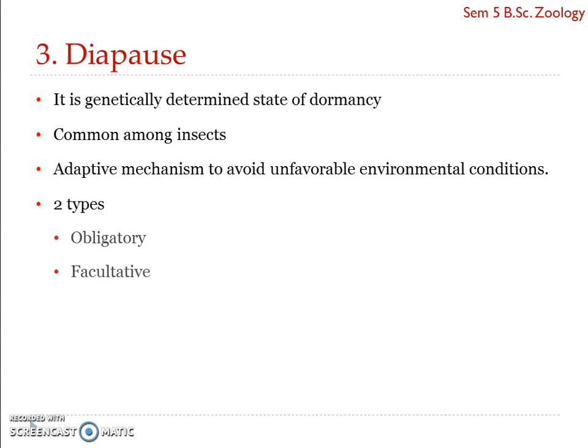Facultative diapause is actually influenced by stimuli, and it is considered to be the most common type of diapause. It occurs only when unfavorable environmental conditions occur — the organism undergoes diapause only when it faces an unfavorable environmental condition, so its onset is triggered by stimuli.